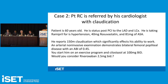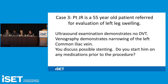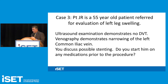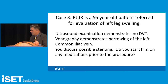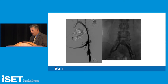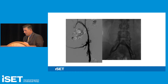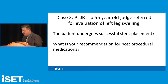Case 3: JR is a 55-year-old with left leg swelling. Evaluation demonstrates no DVT but narrowing of the left common iliac vein. You discuss stenting. Do you start any medication prior to stenting? At the time of stenting, a venographic evaluation shows compression and collateralization left to right. The patient undergoes successful stenting. What is your post-procedure medication? The patient later gets a CT showing small filling defects in the stent. Would that change your management?